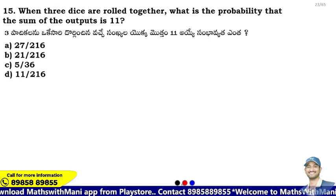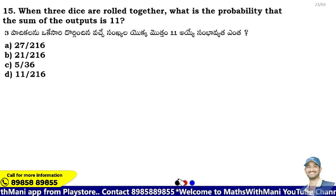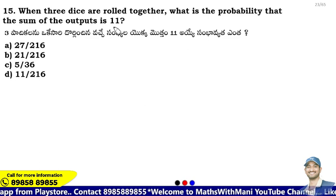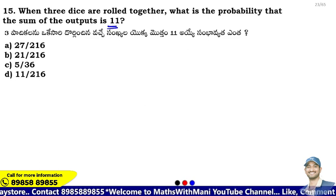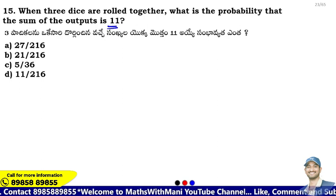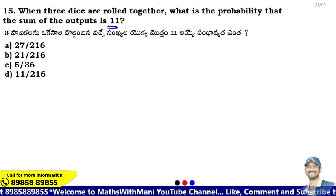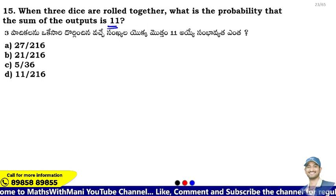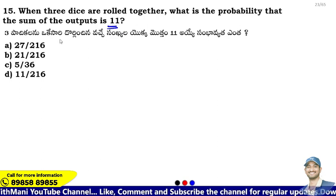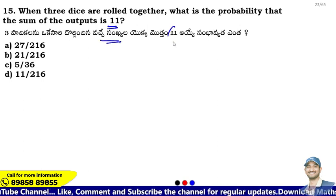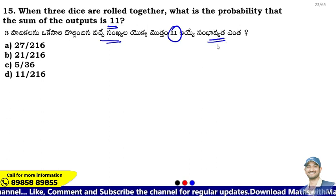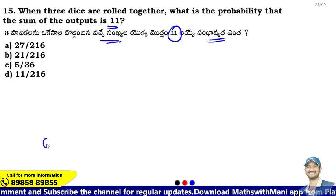When three dice are rolled together, what is the probability that the sum of the outputs is some number? The sample space is 6 cubed, that is 216.